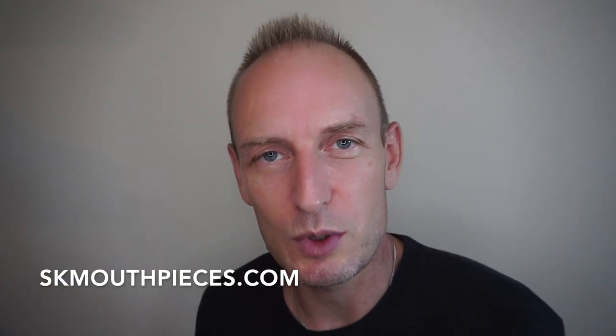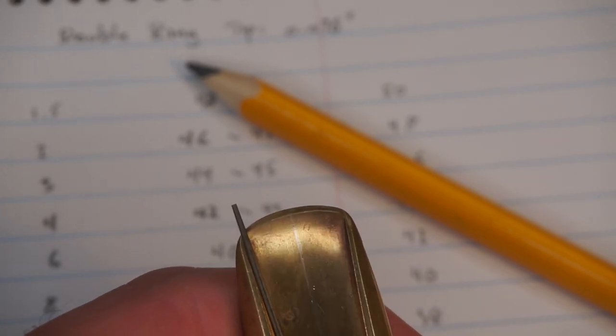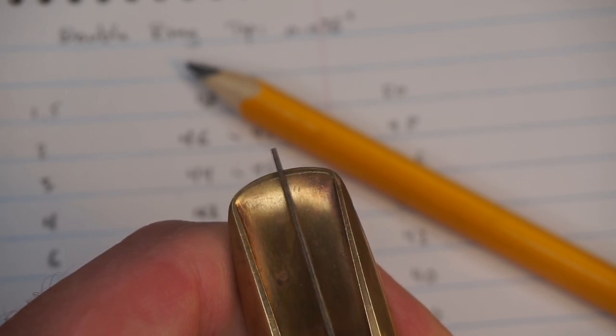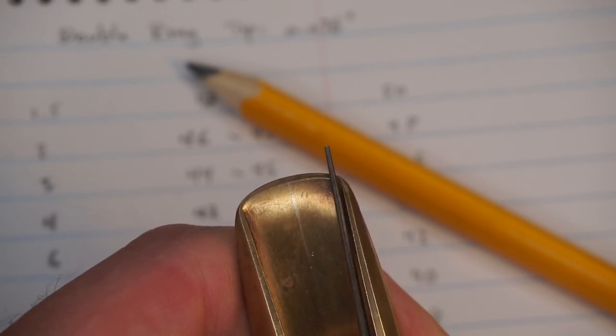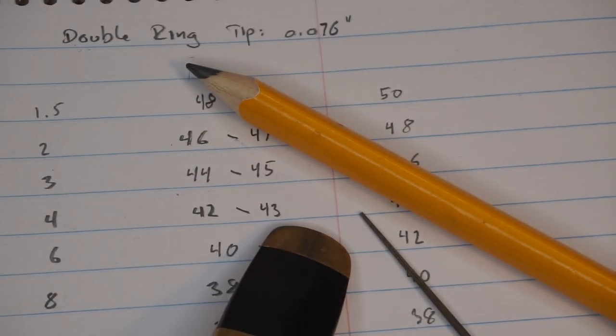I use a needle file to see if the baffle has the correct height, and it actually is the way it's supposed to be here because it's sliding on the inside of the tip rail. If it scratches the baffle, which it will later, then it's too high.